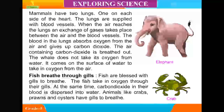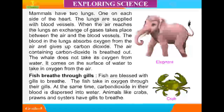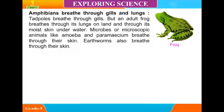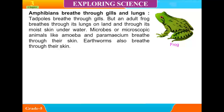Animals like crabs, prawns, and oysters have gills to breathe. Amphibians breathe through both gills and lungs. Tadpoles breathe through gills, but an adult frog breathes through its lungs on land and through its moist skin underwater.